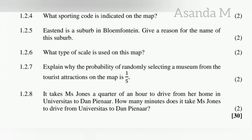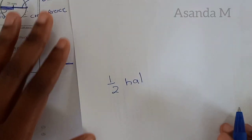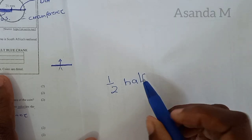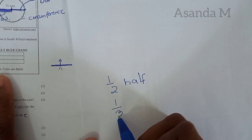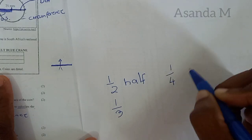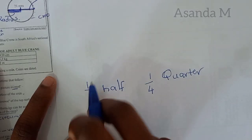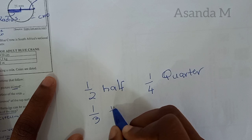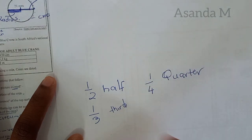The last question: it takes Mrs Jones a quarter of an hour to drive from her home in Universitas to Den Pinar. How many minutes does it take? Always read the question carefully. Let me explain quarters and halves: one half means 1 over 2, one third means 1 over 3, and a quarter means 1 over 4. So when they say a quarter of an hour, they mean 1 over 4 of an hour.